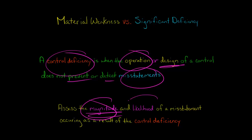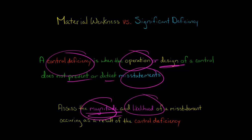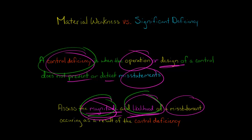We're also going to look at the likelihood that a misstatement would occur as a result of this control deficiency. For example, if there's an issue with the control but there's a 1 in 10 billion chance of a misstatement, the likelihood is pretty remote. We can put this in a grid where we look at magnitude and likelihood to determine whether something is a plain control deficiency, a significant deficiency, or the worst case scenario — a material weakness.